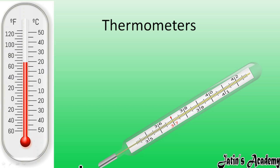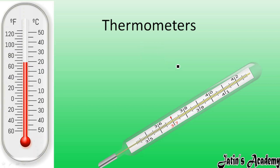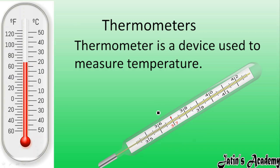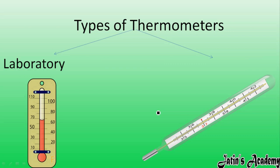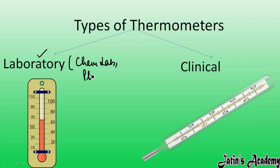A thermometer is the instrument used to measure temperature. There are two kinds of thermometers: the laboratory thermometer, used in physics or chemistry labs, and the clinical thermometer, used by doctors in clinics.